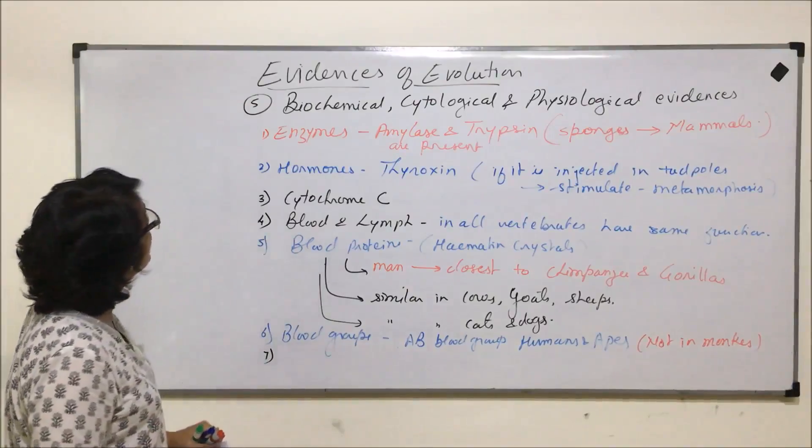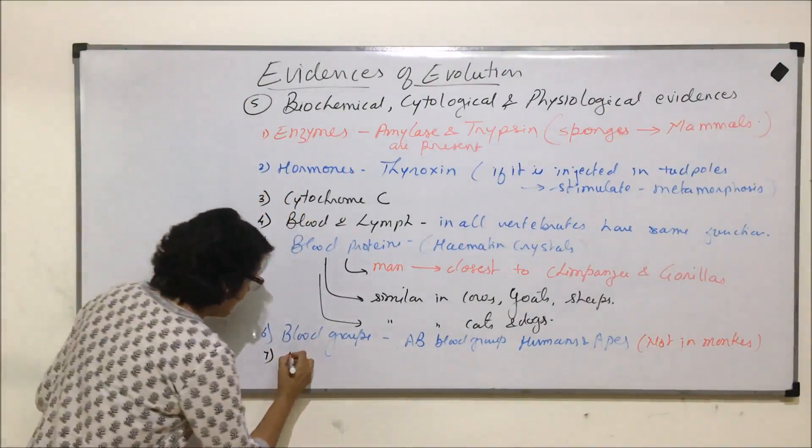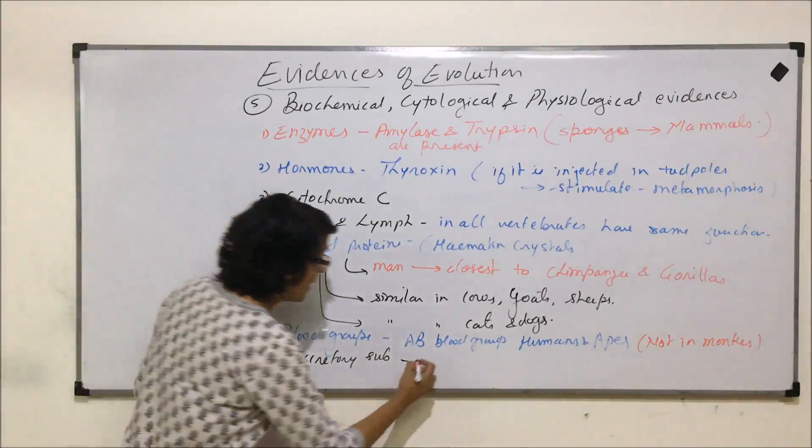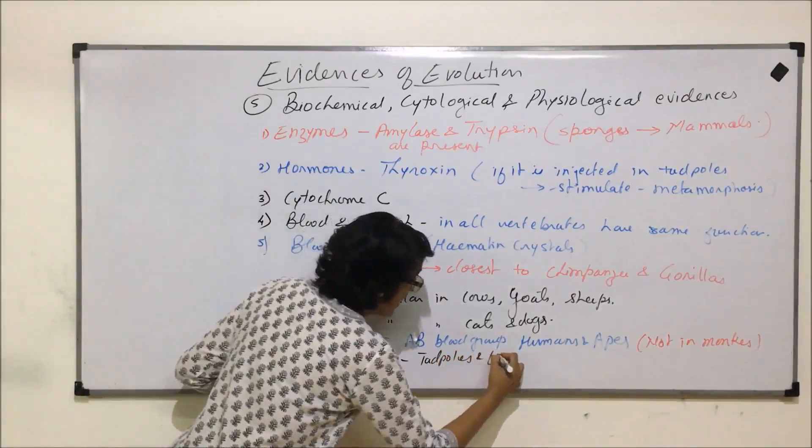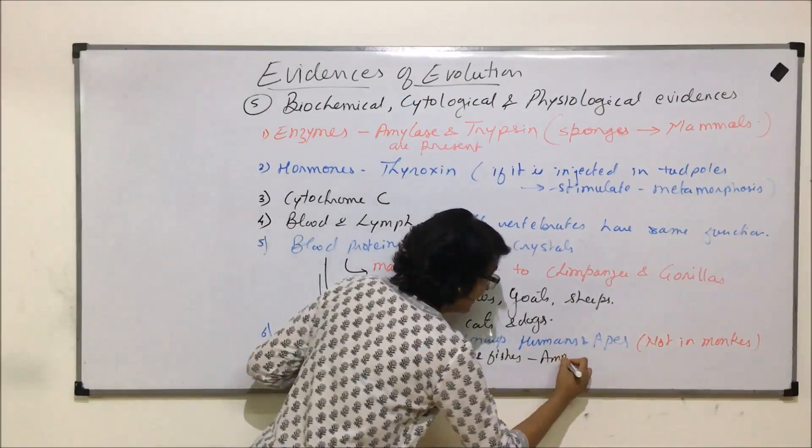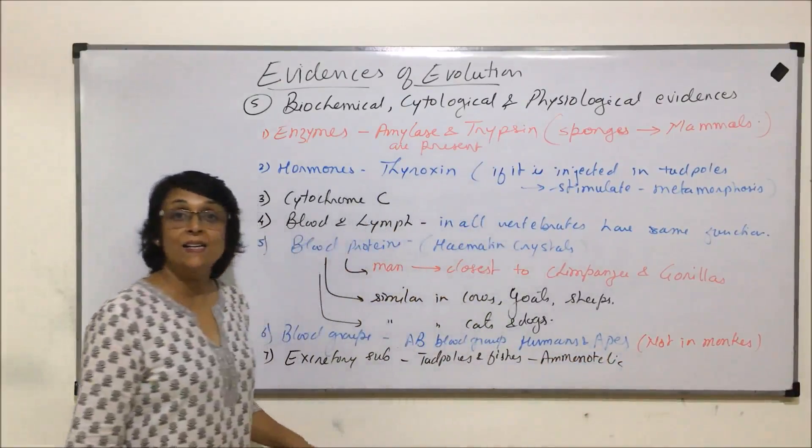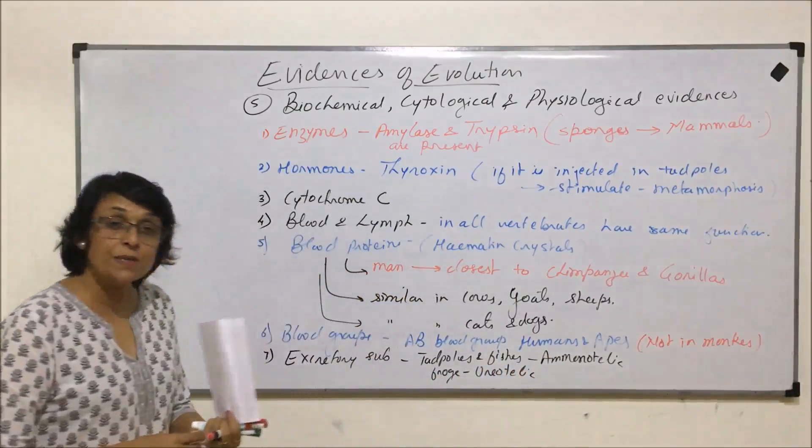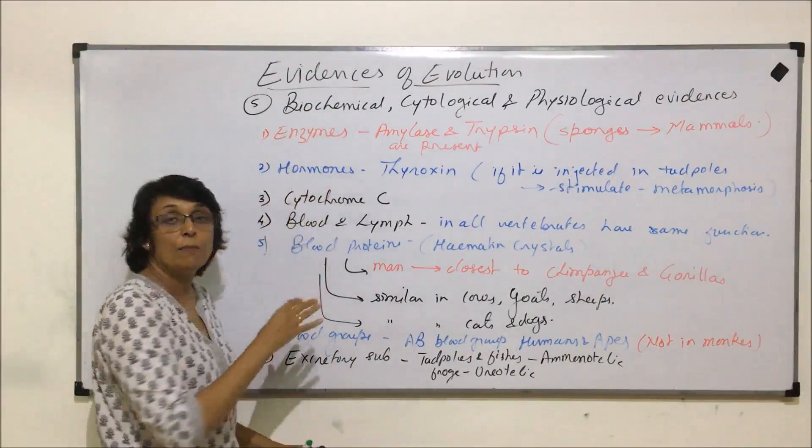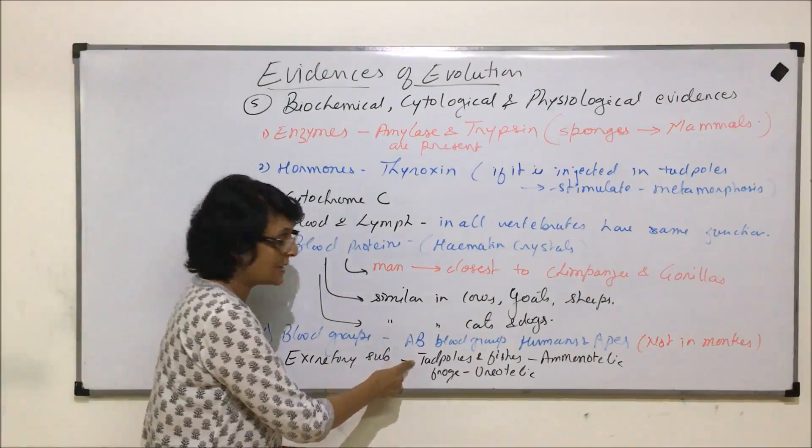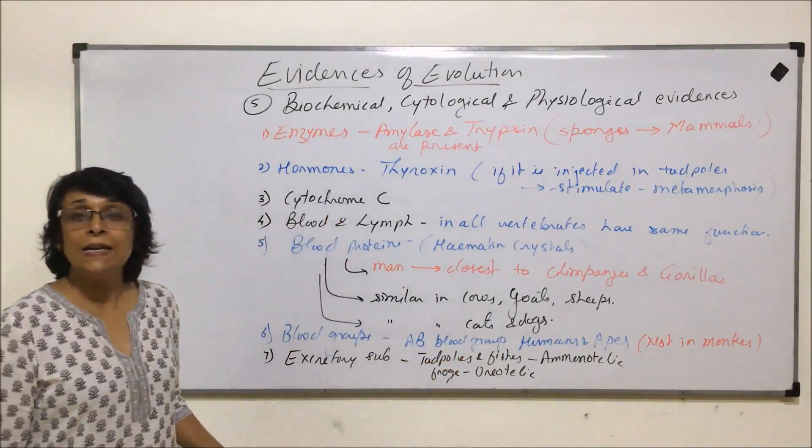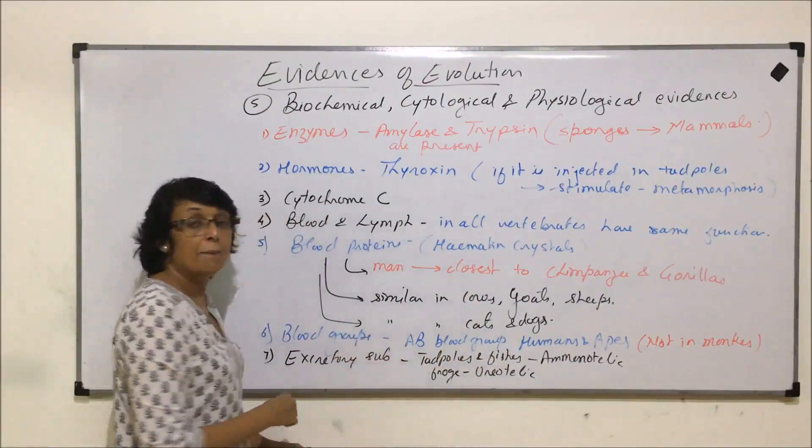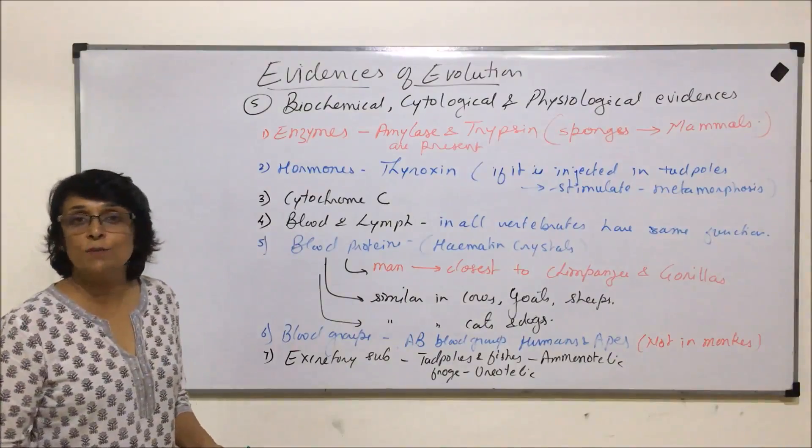Then next example under this biochemical, physiological can be of excretory substances. Like tadpoles and fishes - tadpoles and fishes are ammonotelic, but the adult frogs are ureotelic. So this again helps us understand many things. This is under the category of biochemical or physiological things, but this example that tadpole and fishes excreting the same way, that is ammonia, can again be an example of convergent evolution. Belonging to different groups, one is aquatic, the other is amphibian, but because they are in the same kind of habitat, they are showing similar kinds of characters.